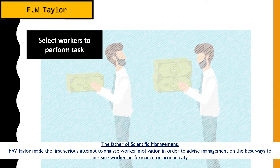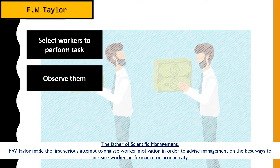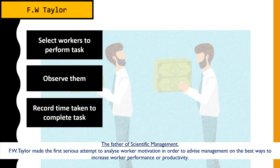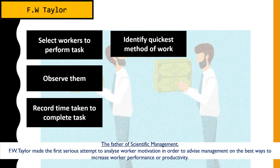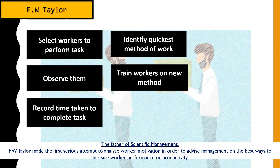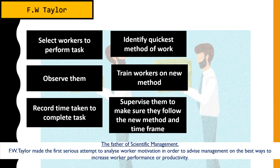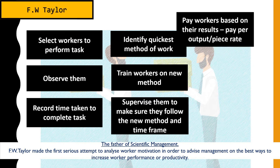To determine the root cause, Taylor came up with a few steps. First, he selected workers to perform a particular task, observed them to see how they did the work, and recorded the time they took to complete it. Next, he tried to identify a quicker way to do that type of job. Once identified, he trained workers to use the new method, then supervised them to ensure they followed the new methods within the required time frame.